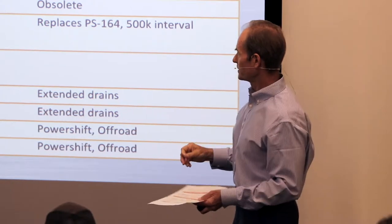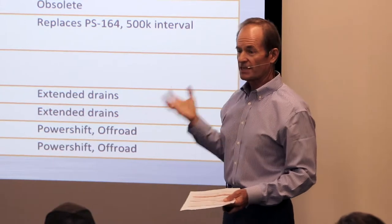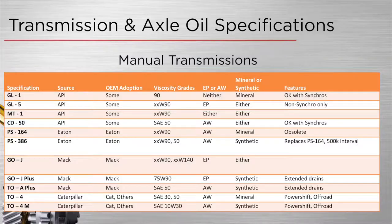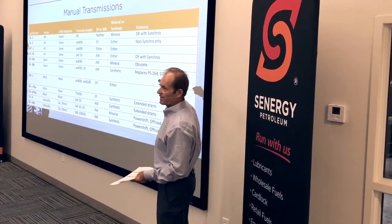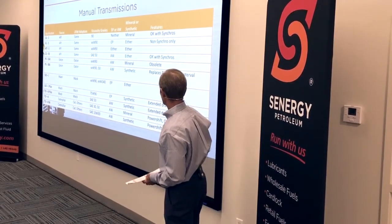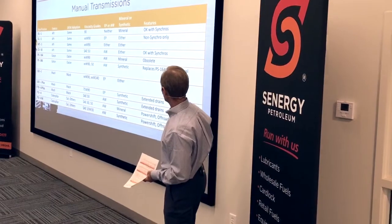They were up to a PS164 rev 7, and they decided to obsolete it in favor of a synthetic. So they designed the synthetic spec, which is PS386. It is a very, very good product, but it replaces the obsoleted 164 and permits a 500,000 mile service interval. That's the valuable point on manual transmissions.